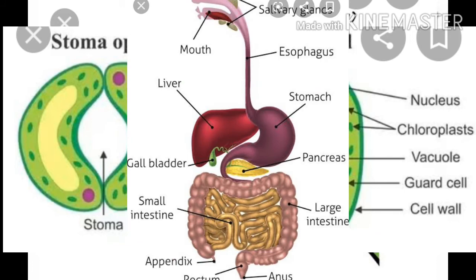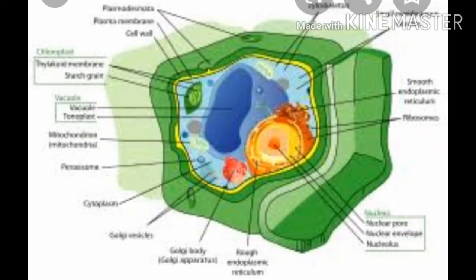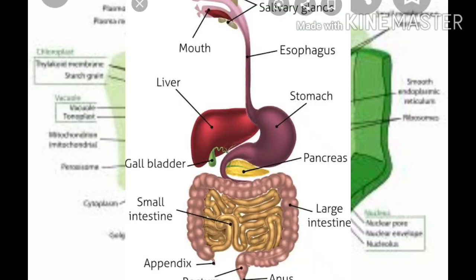Feeding and nutrition has many steps and each step is the result of cellular activity. Sensory cells on the tongue taste the food. Muscle cells of the jaws and tongue help in chewing and swallowing. The cells of digestive glands secrete enzymes to digest food. The cells of the inner lining of the intestine absorb digested food. Extra food is stored as fat in fat cells and as glycogen in liver cells. Glycogen is a polymer of glucose — many molecules of glucose combine to form a macromolecule known as glycogen.